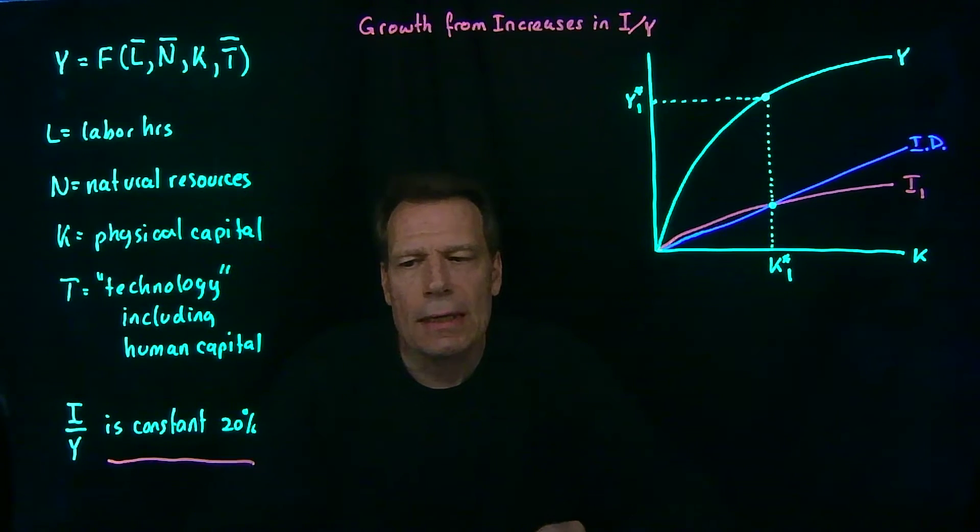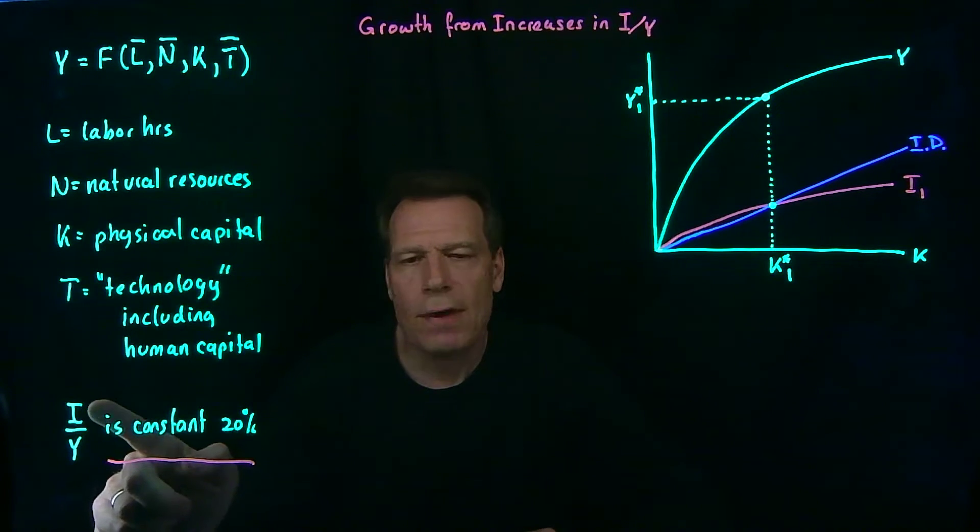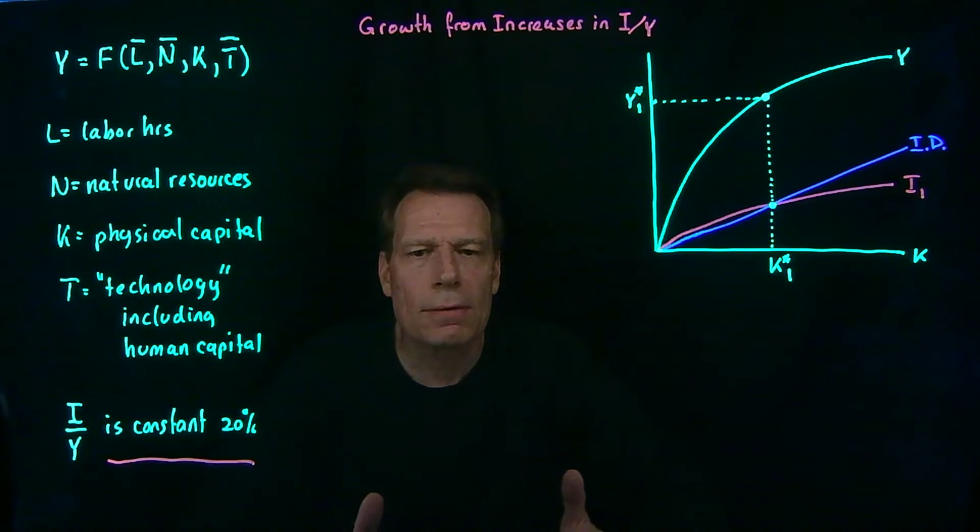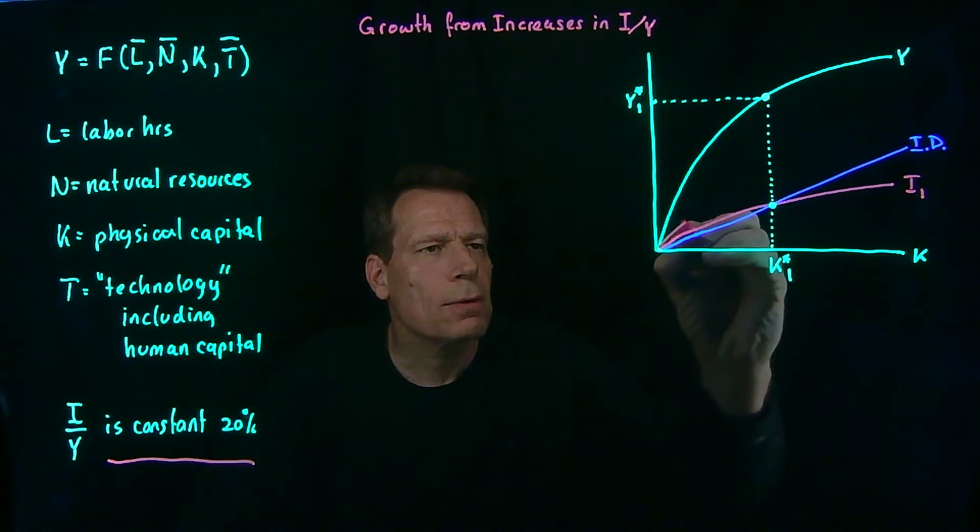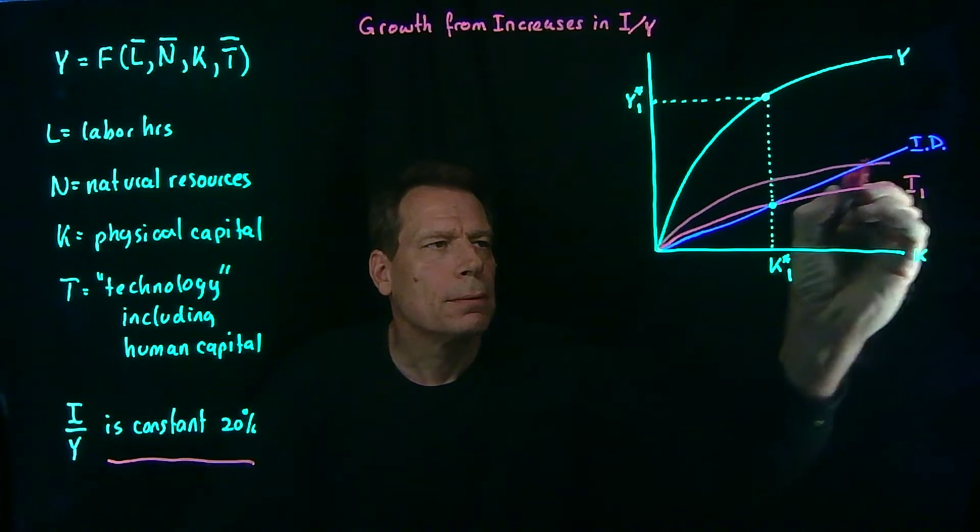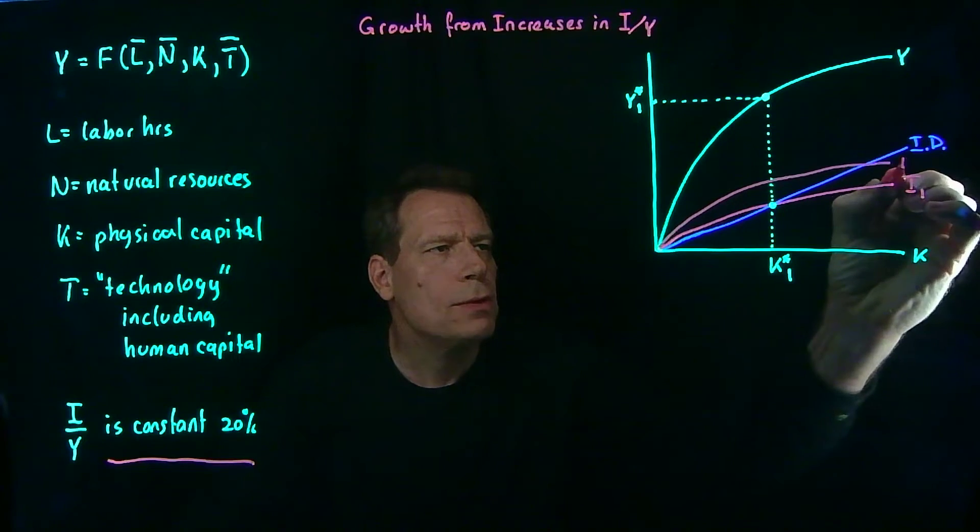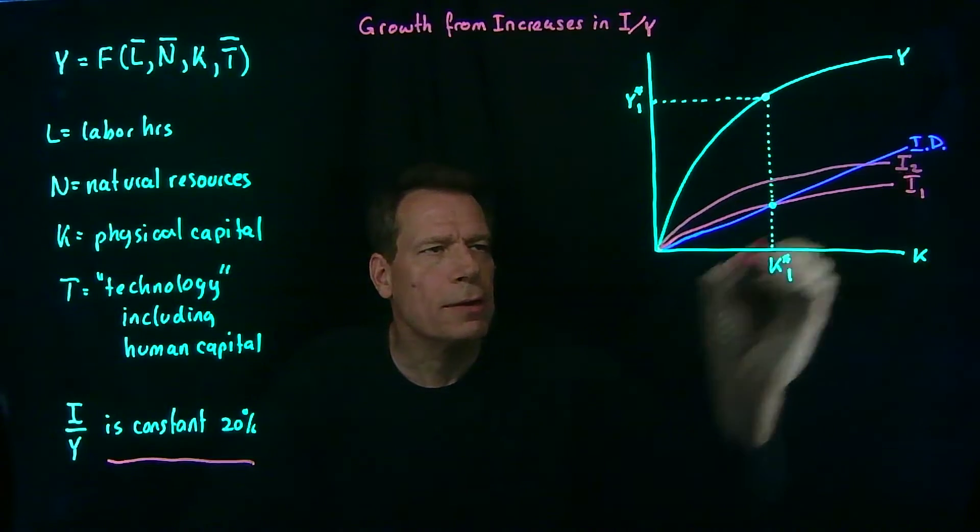Now we increase that investment share of GDP to something larger, 25%, 30%, whatever you want. And that's going to rotate that investment curve up. So now we have a new investment curve. We'll put a 2 on this.